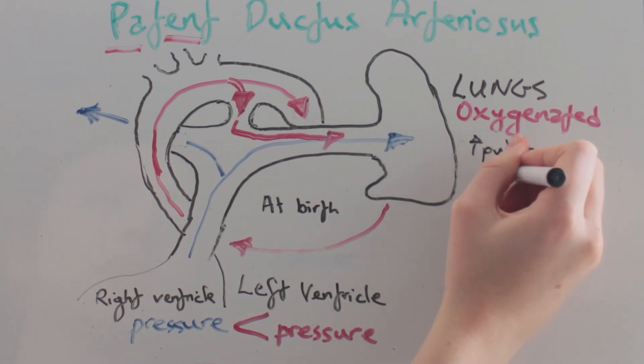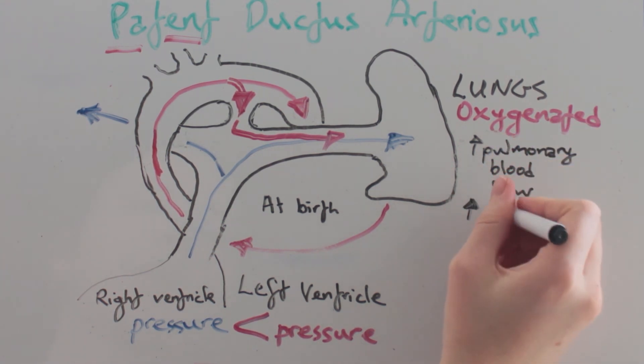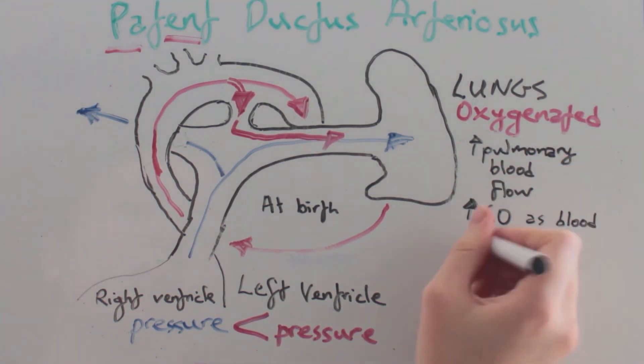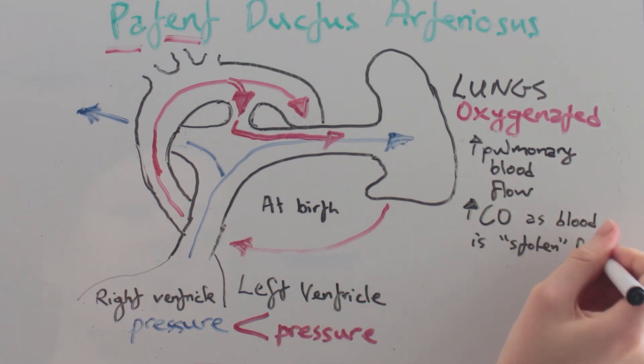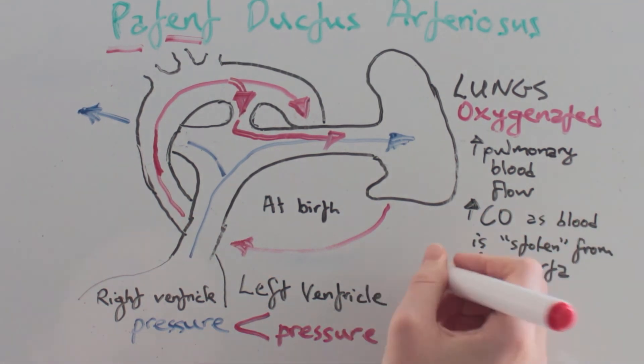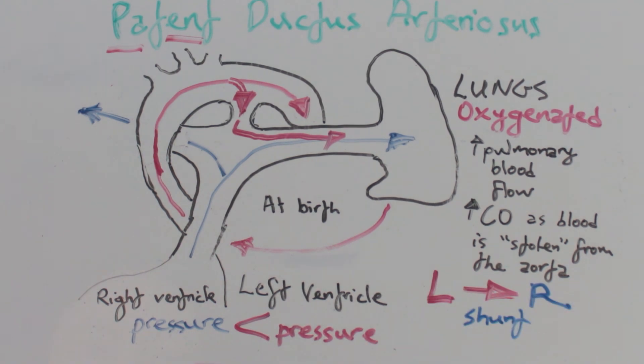This increases our pulmonary blood flow and cardiac output must increase to compensate for the blood which is now being stolen from the aorta. This is clearly a left to right shunt and is thus an acyanotic defect.